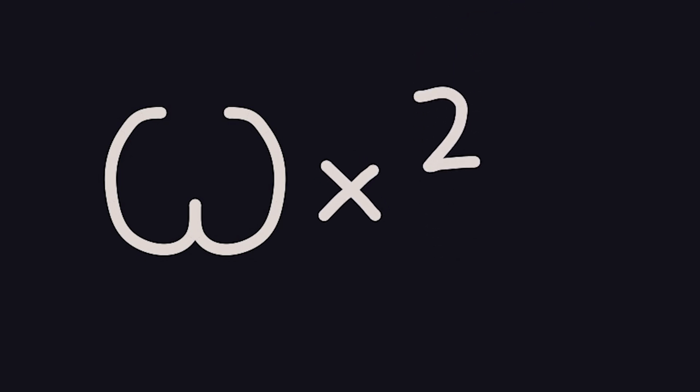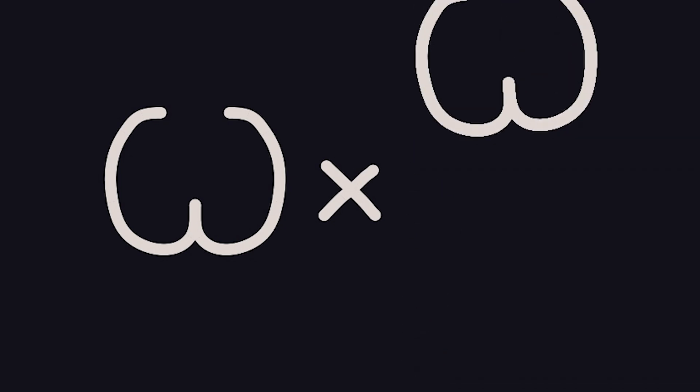Wait another forever and we get omega times three — and that's another number we can keep increasing. Wait aleph null forevers to end up with omega times omega, or omega to the power of two. Another aleph null forevers gets us to omega cubed. Wait aleph null forevers more and we reach omega to the power of omega — omega tetrated to two. Then omega to the power of omega to the power of omega — omega tetrated to three. Eventually we reach omega tetrated to omega. That number has a special name: epsilon naught.